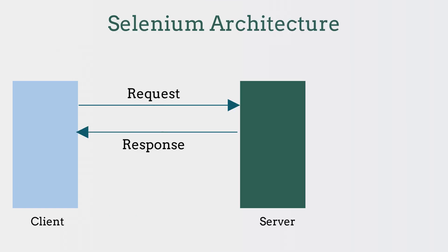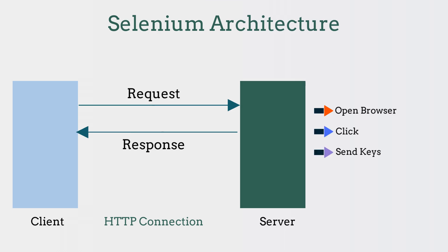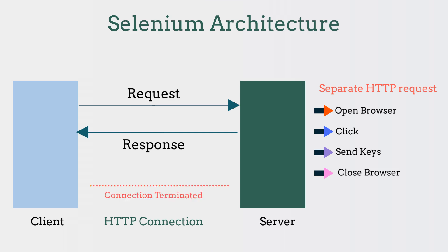This architecture is contrary to Selenium, which uses the HTTP connection protocol and sends each command — like browser opening, clicking, sending keys, or closing the browser — as a separate HTTP request. Also, in Selenium, the connection between the server and the client will be terminated after each request and re-established for the next request. This is the reason why Playwright is faster than Selenium.